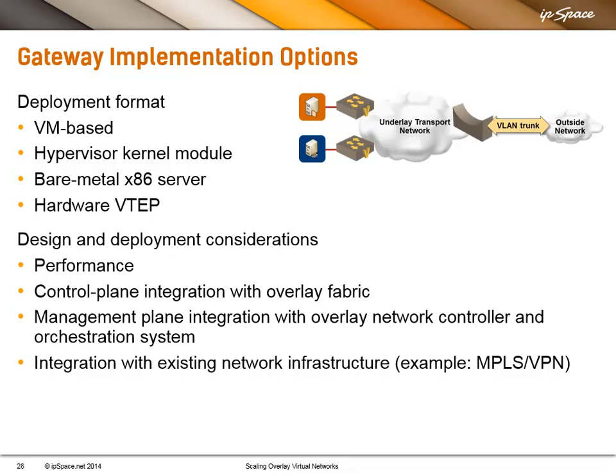It all starts with the performance question — how much bandwidth do you want to pass through that gateway? Second, you have to consider integration with the control plane: how will you integrate your SDN controller with this gateway? Next, how will you integrate the cloud management system — for example, if you configure a new tenant and assign an outside VLAN, will you be able to automatically deploy that definition into the gateway or will you have to write your own glue? Finally, how will you integrate with existing WAN infrastructure like MPLS-VPN, which is particularly important for MPLS-VPN providers wanting to enter the cloud services business?